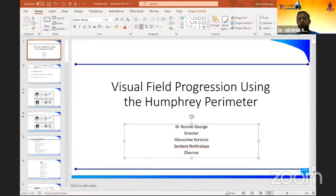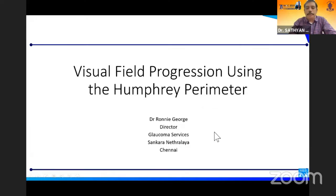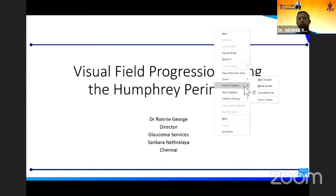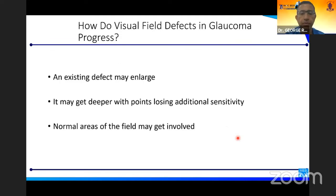Thank you, Sathan, for the invitation. I'm going to quickly take you through visual field progression in Humphrey. What happens for any visual field is that an existing visual field defect can get larger, or it can get deeper with points losing additional sensitivity, or normal areas of the field may get involved.